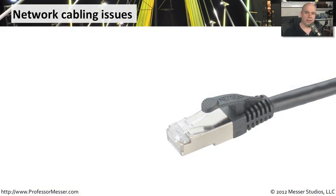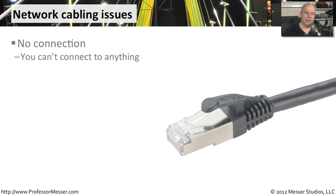When you're troubleshooting cabling issues, it can sometimes be very easy to tell what's going on because you can see the cable. You can look at it to see how it looks, unplug it and look inside of the connector. But sometimes cable problems are invisible — you can't look at them to determine what's going on, so you have to start troubleshooting in other ways.